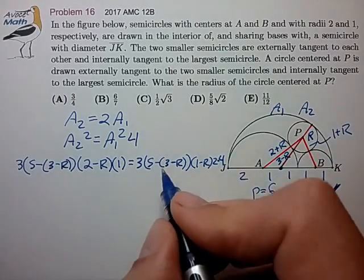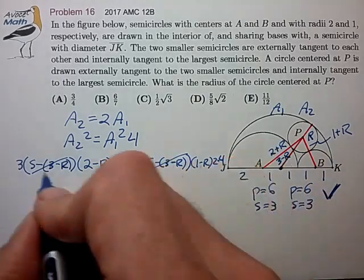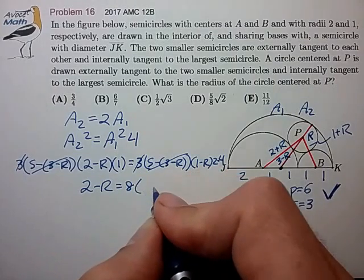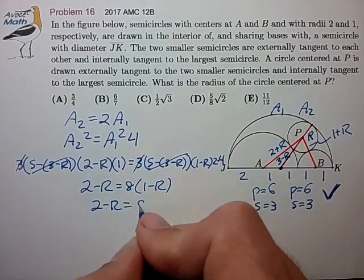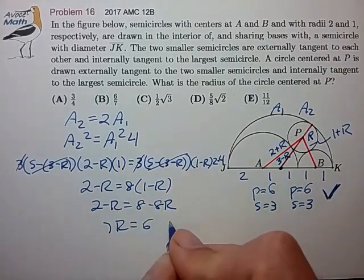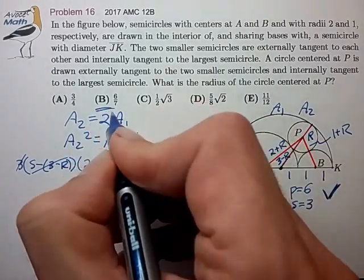We have a lot of cancellations. These cancel out because they share that common side. The 3 cancels out. And that leaves us with 2 minus R, 8 times 1 minus R, 2 minus R, 8R, 7R, 6R is 6 over 7, and then choice B.